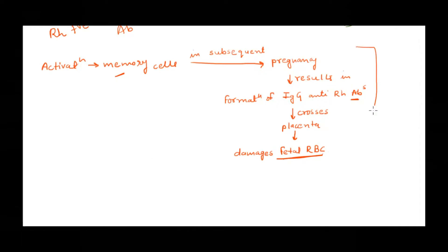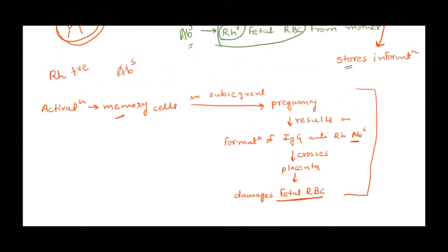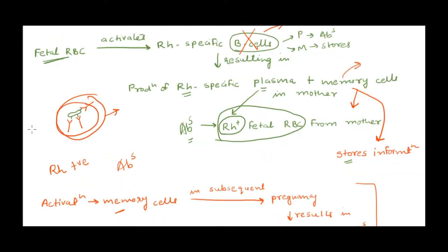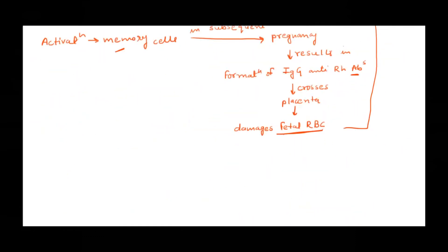So what can we do to prevent this condition? The problem occurs because the B cells of the mother are getting activated, producing memory cells that cause problems in subsequent pregnancies. Can we stop the activation of the B cell itself? What is done is instead of letting the mother's B cells get activated and produce antibodies to clear fetal RBCs, we give ready-made antibodies against the RH factor to prevent B cell activation. That prevention measure is called RhoGAM.